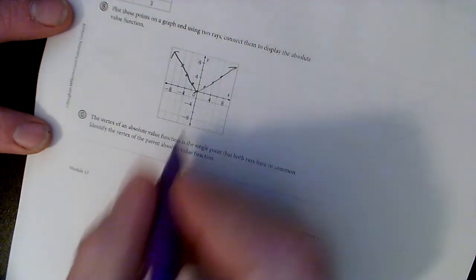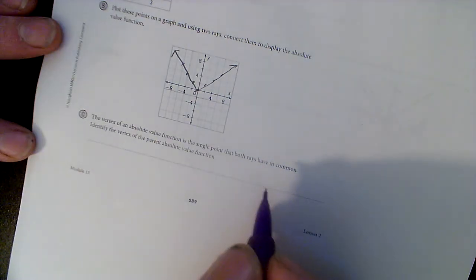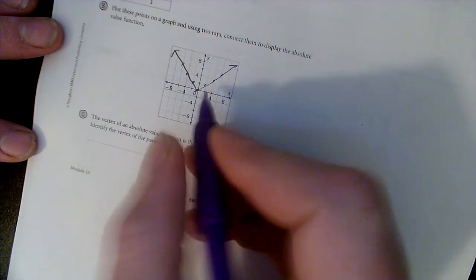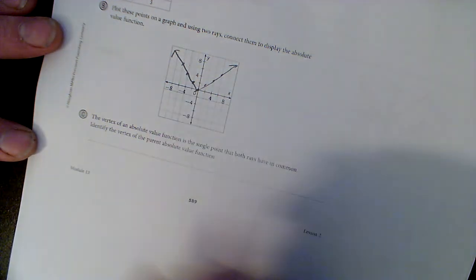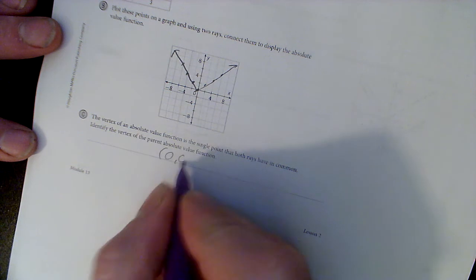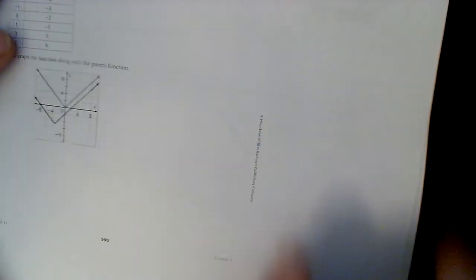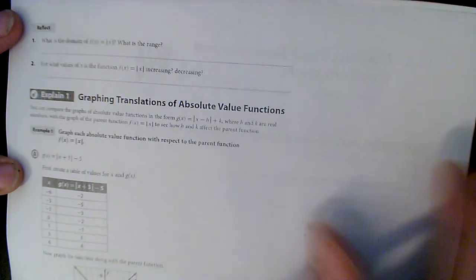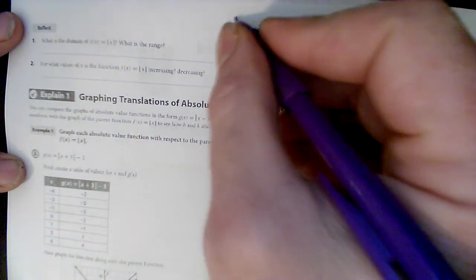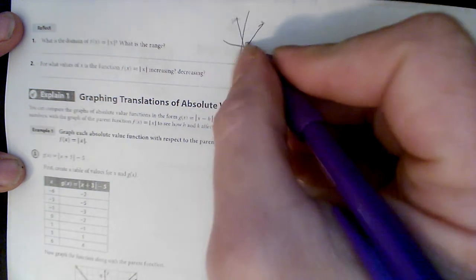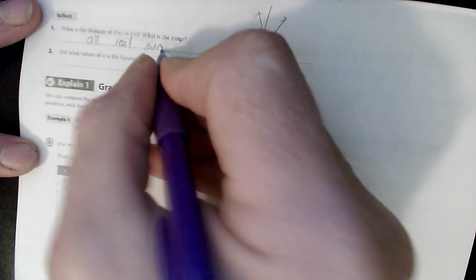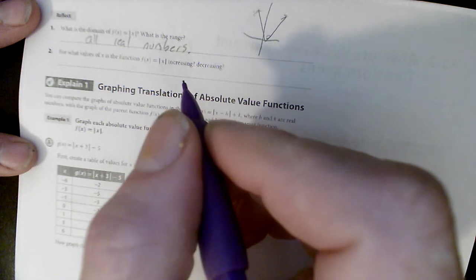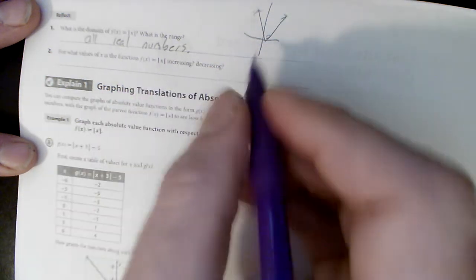The vertex of the absolute value right here, this is the vertex. It's a single point on the graph that both rays have in common. So here's a ray, there's a ray, and it's a single point on the graph. Where I identify this vertex, we can see it is at 0, 0. The domain of that, if you'll notice, it went like this. My domain was all real numbers. It forever went left and right. But my range is different. It's 0 up.